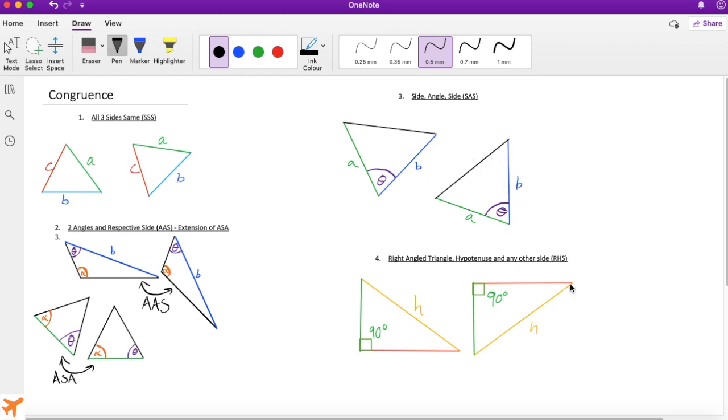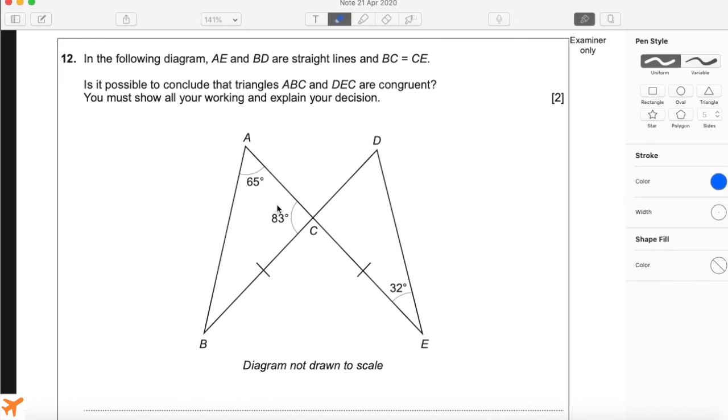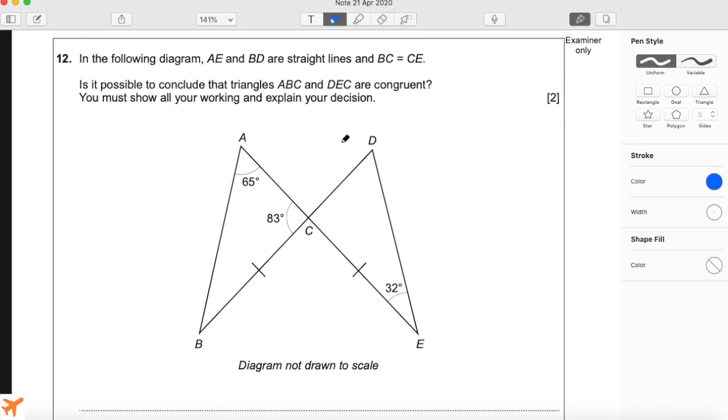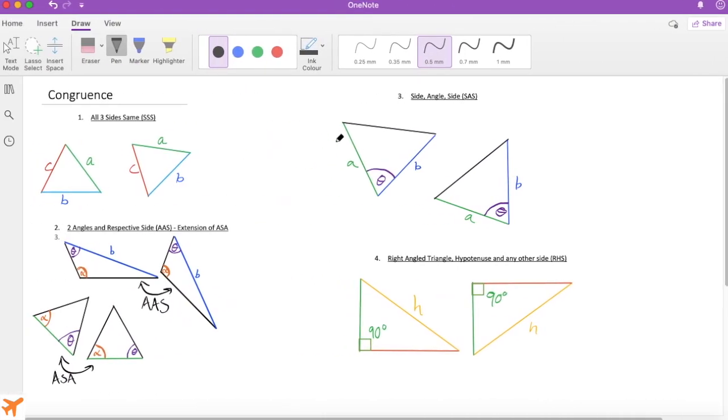Then we have this special case for right-angled triangles where the hypotenuse and the other side are the same. Those are the four rules for congruence. If we have any one of these four rules, we can say that the triangles are congruent. I'll just go back to the question now.